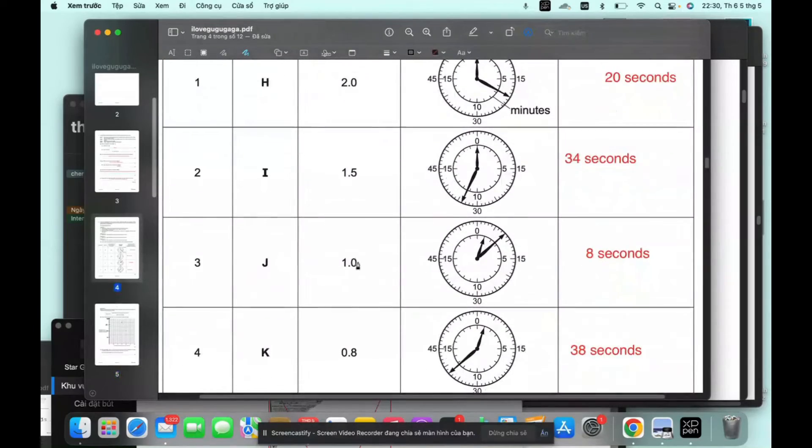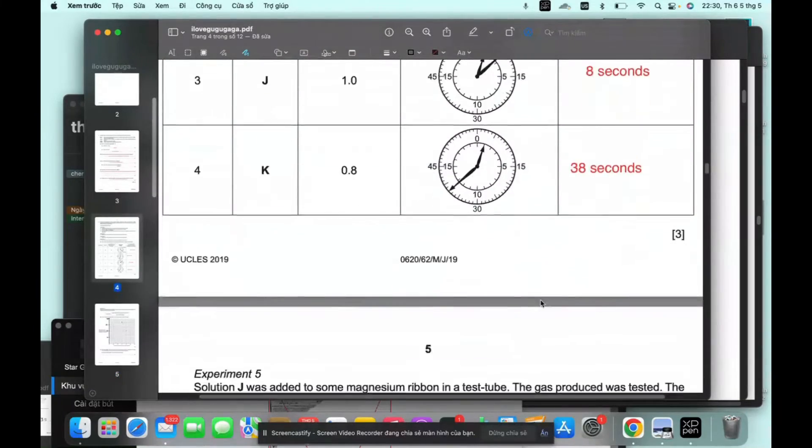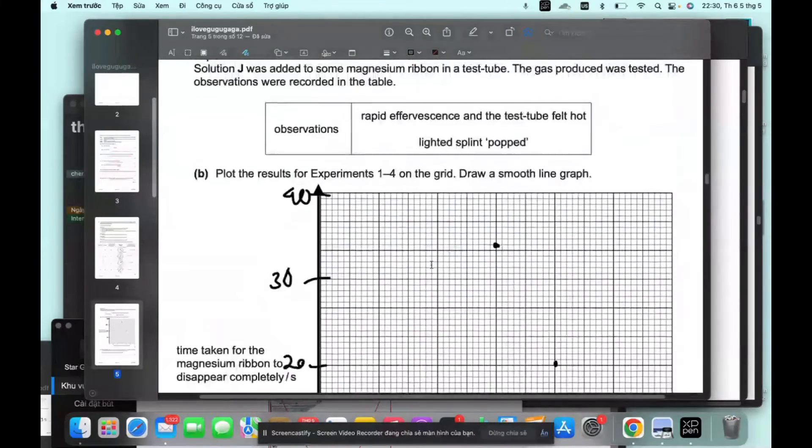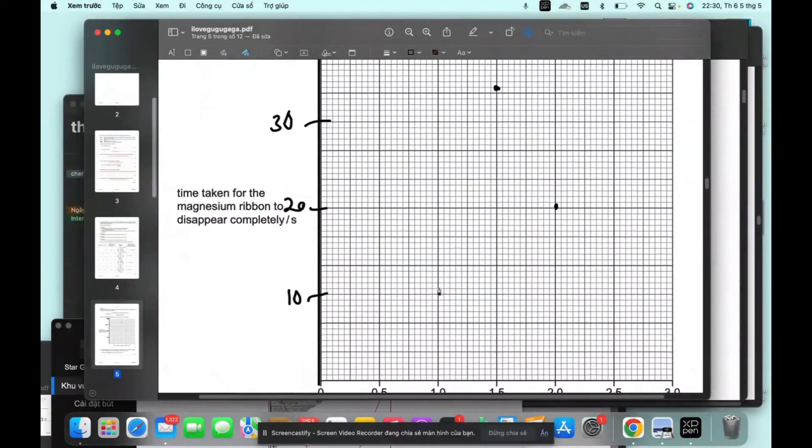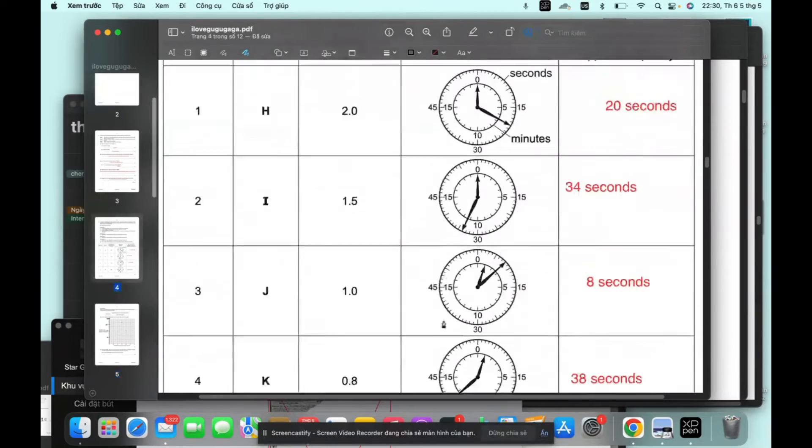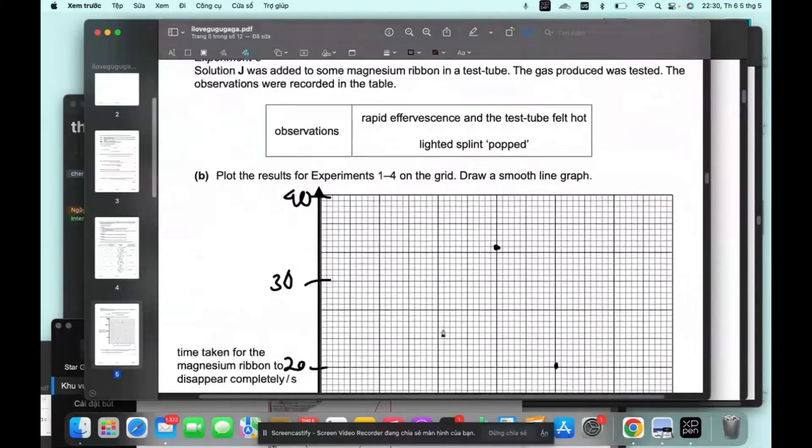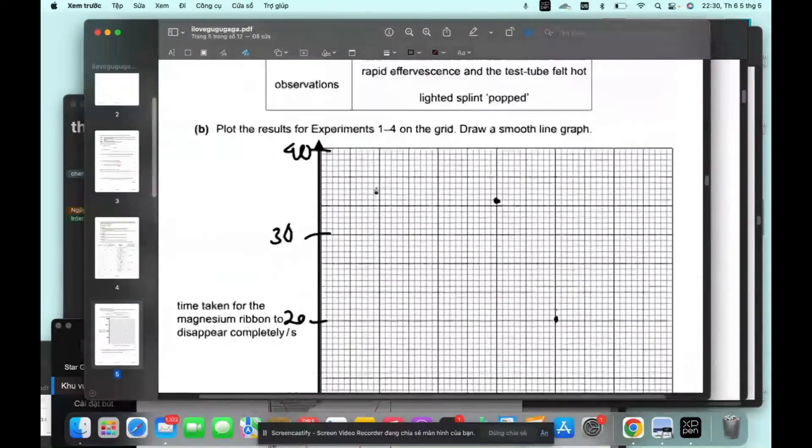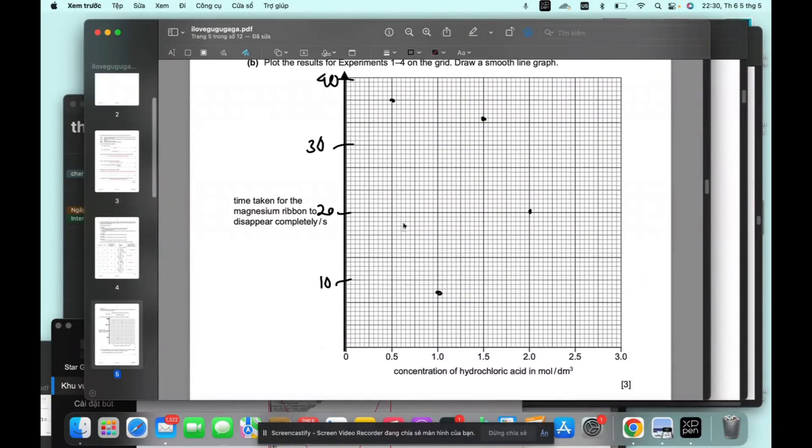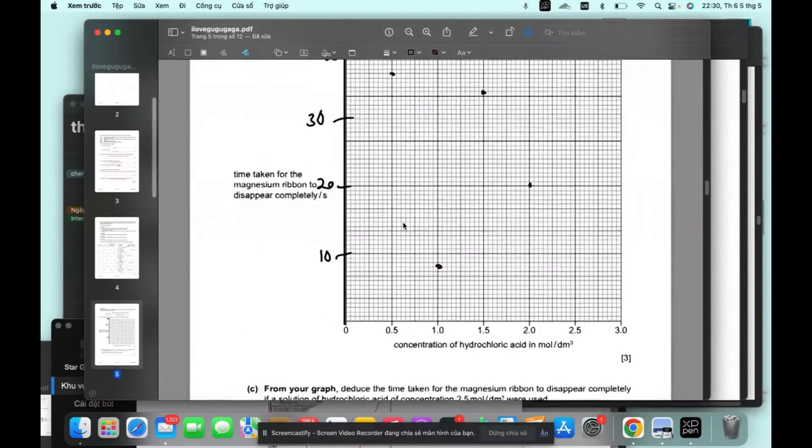And now the third one is 1 and it's 8 seconds. 1 in 8 seconds. I'm not sure how this would work out as a smooth line graph. And 0.5 is in 38 seconds. 0.5, 38. Okay, so how are we gonna do this with a smooth line graph? It's so scattered.